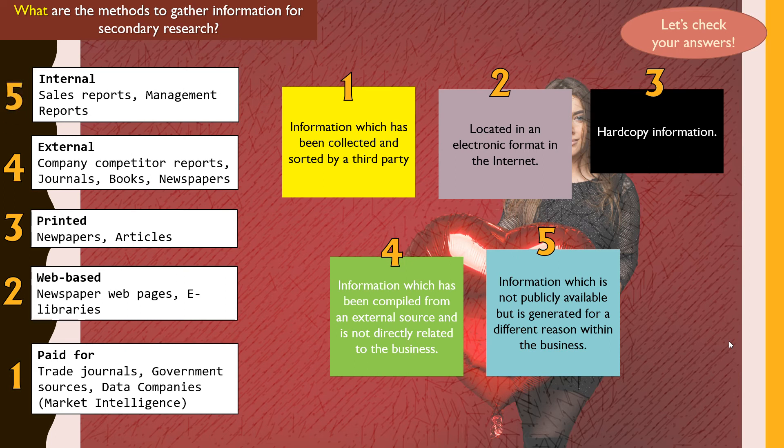Item five is information which is not publicly available but is generated for a different reason within the business, such as the company's own financial reports, management reports, and sales reports — done for a specific purpose, but can be used by the company in new research. So these are five categories of ways to gather information for secondary research.